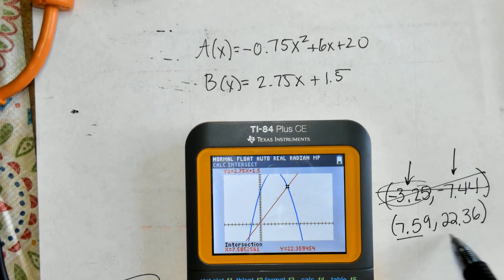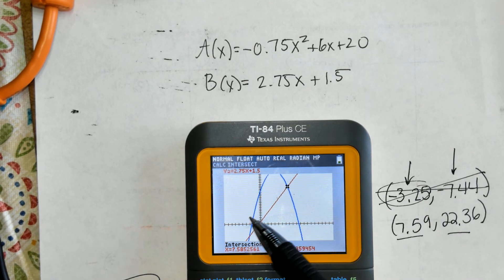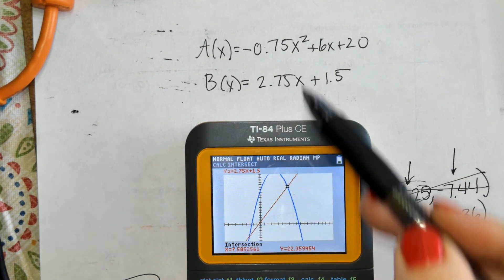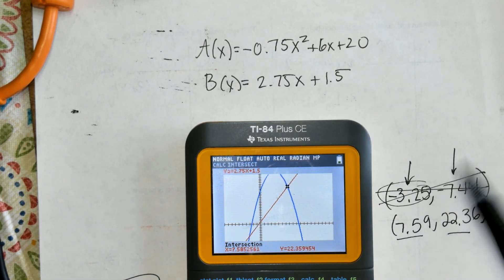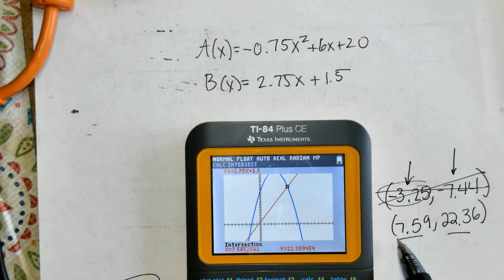You can't have a negative number of months. So there is only one answer. And this says that the price of the two stocks, both A of X and B of X, are equal after about seven and a half months. And this was the price when they are equal.